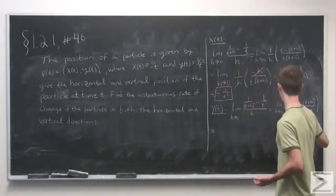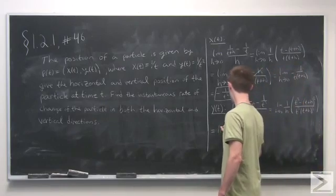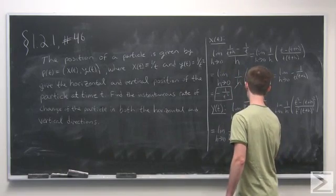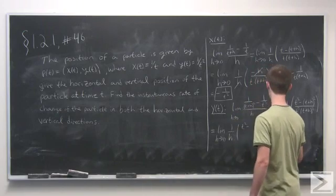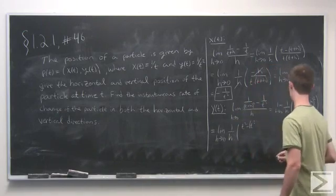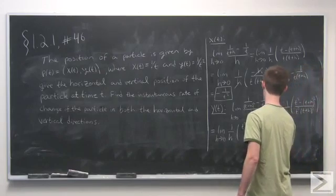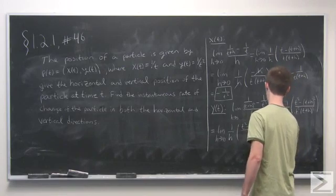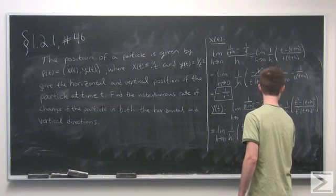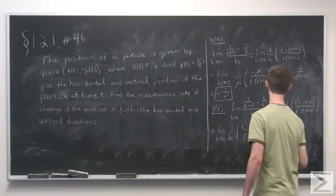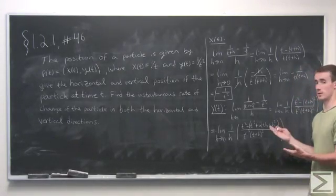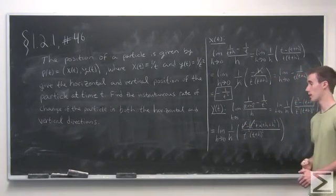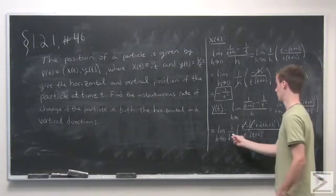Now we multiply out the numerator and get 1 over h times t squared minus the quantity t squared plus 2th plus h squared, all over t squared times t plus h quantity squared. We get some nice cancellation — the t squared terms cancel out, and every remaining term has an h in it, so we can cancel out the h's.